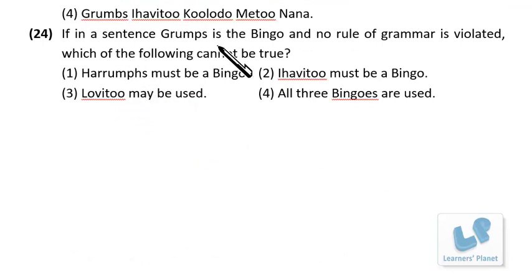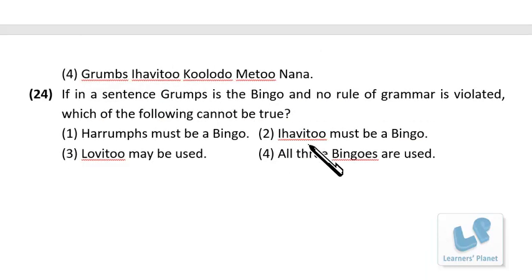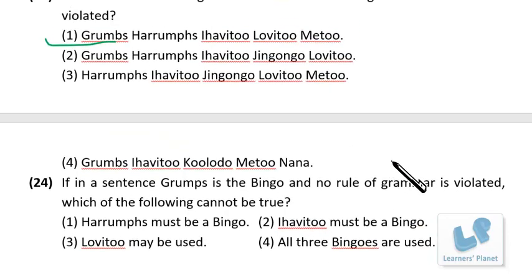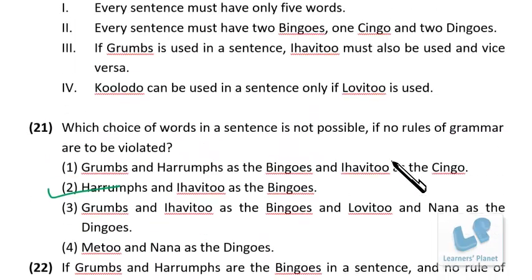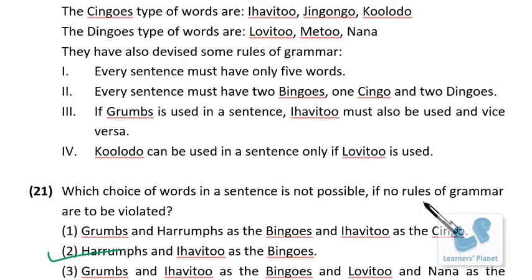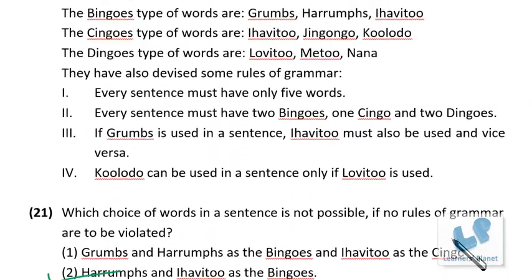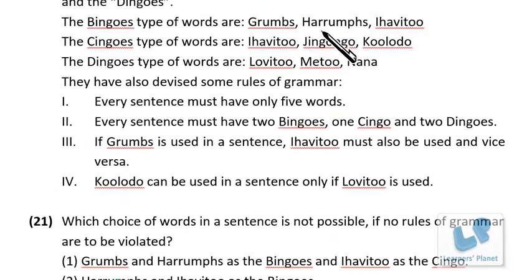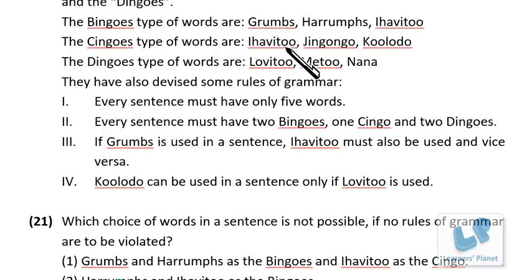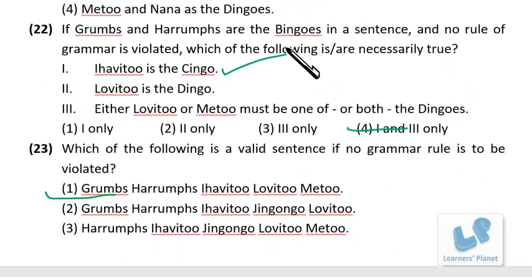Question: if grams is a Bingo and no grammar rule is violated, which of the following cannot be true? Since iha v2 must accompany grams, iha v2 can serve as the Single rather than the second Bingo. The second Bingo could be harams. Therefore, iha v2 being a Bingo cannot be true, as it would create three Bingos.